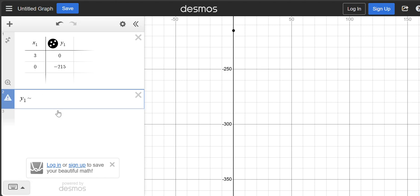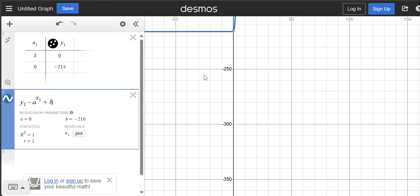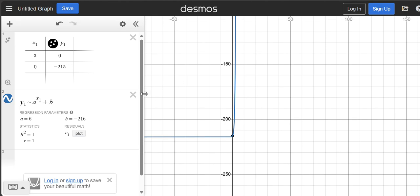So this is y1 here because in the table I have y1. And then Desmos is programmed for this squiggly, which is right underneath the escape key on your keyboard, to be sort of like the equal sign. And then I could do a to the x1 plus b. And this actually graphs the exponential for me. And as you can see, it also tells me that a is 6 and that b is negative 216.